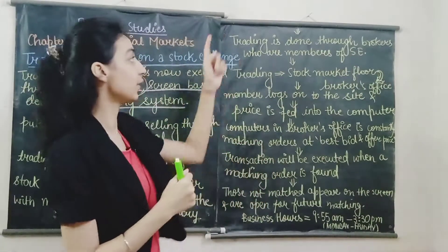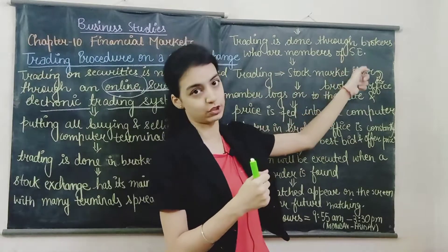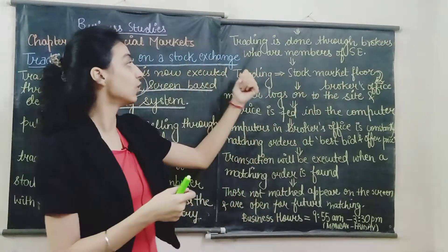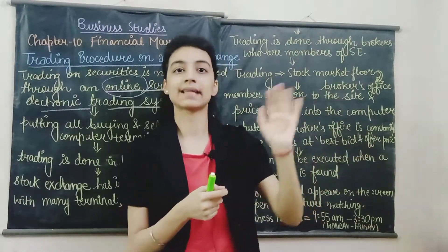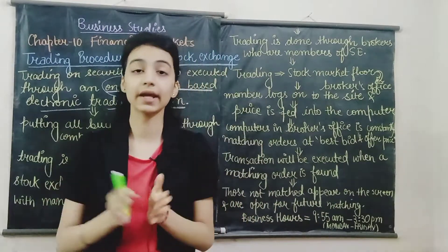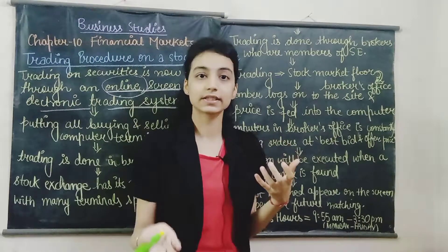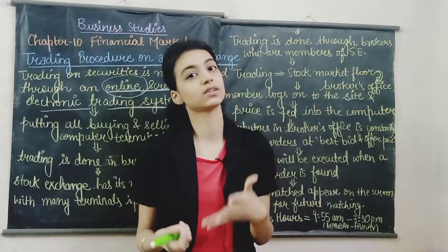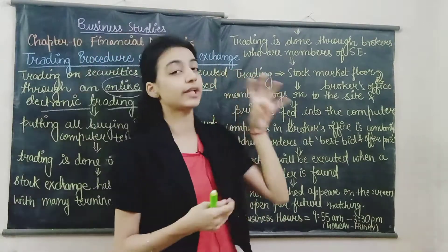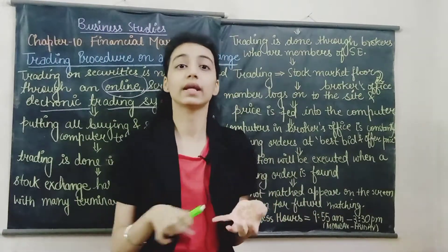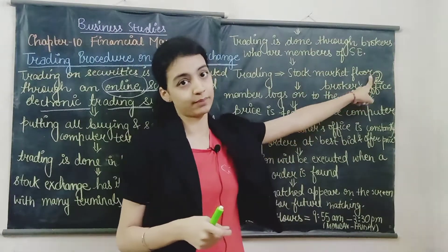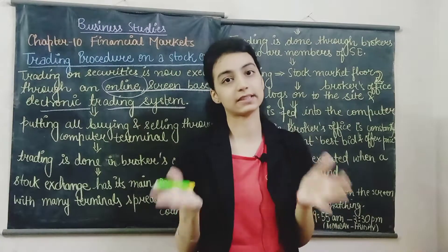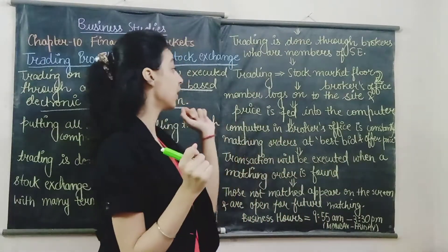Trading is done through the brokers who are members of the stock exchange — they are authorized. Previously trading happened on the stock market floor; now it happens at the broker's office. The auction system I mentioned was for the stock market floor, and I have explained how the new system works.